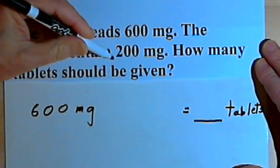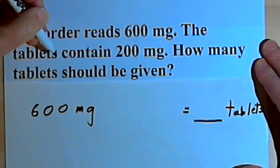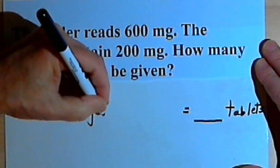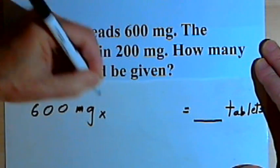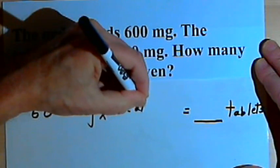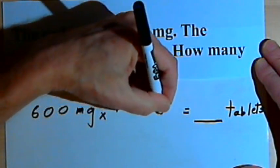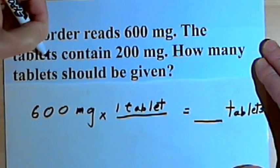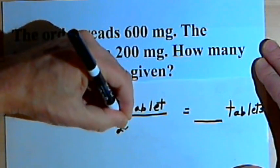I know that each tablet contains 200 milligrams. I'm going to take that information and make a fraction. The fraction is going to be 1 tablet, that's the numerator, over how much each tablet contains, 200 milligrams.